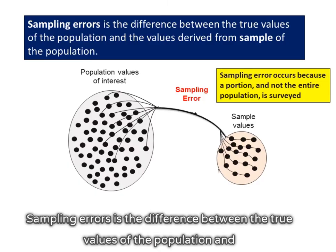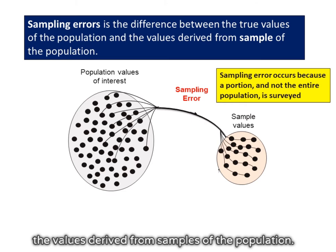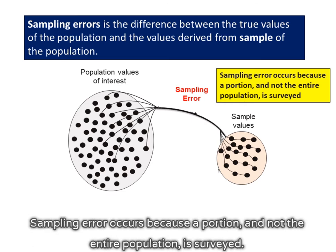Sampling error is the difference between the true values of the population and the values derived from samples of the population. Sampling error occurs because a portion, and not the entire population, is surveyed.